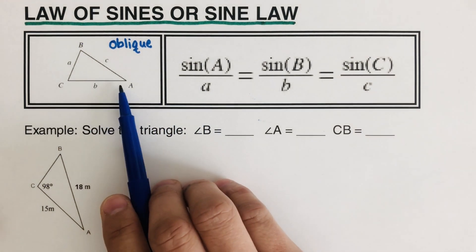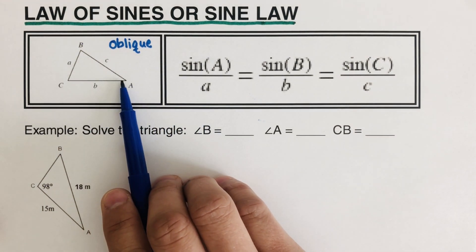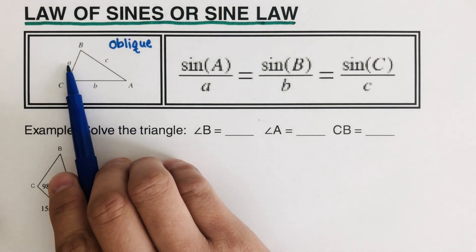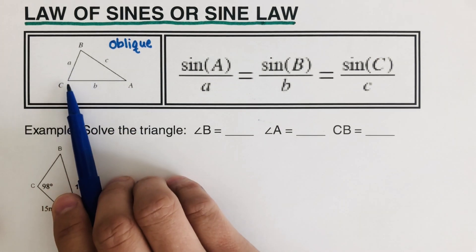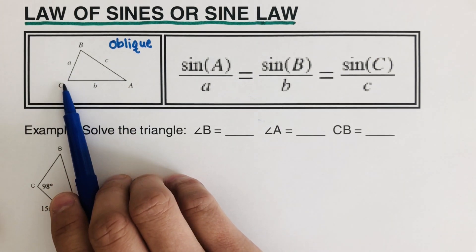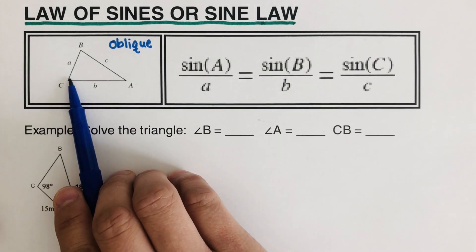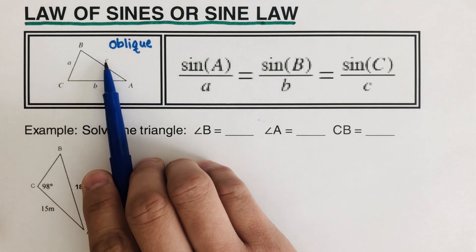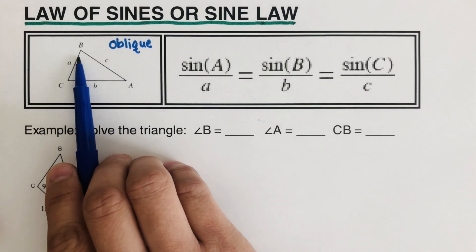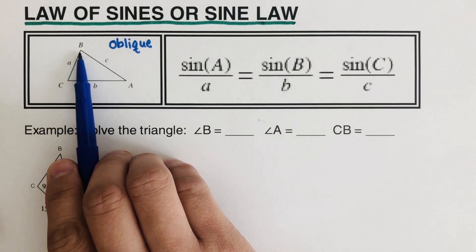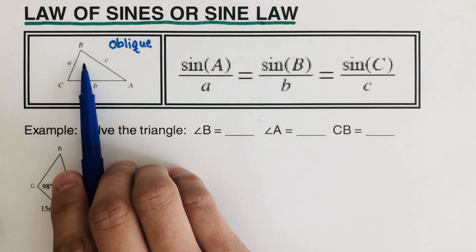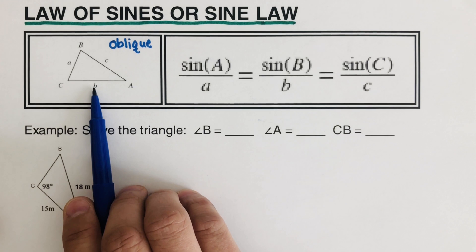For example, if we have angle A, the side across from it is small letter a. Angle C has side small letter c across from it, and angle B has side small letter b across from it.